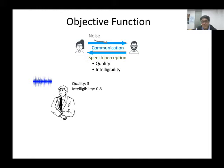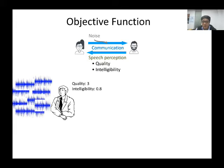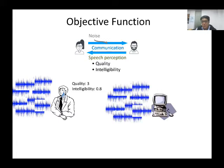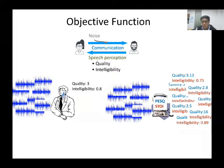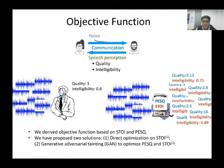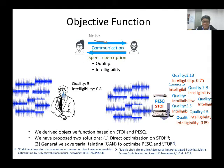It is not feasible to conduct human listening tests for large amounts of samples. Accordingly, we use two evaluation metrics: PESQ and STOI, which evaluate speech quality and intelligibility respectively. Many studies confirm these metrics are highly correlated with human perception. Based on this concept, we have proposed two solutions: a direct optimization approach published in IEEE TASLP, and an indirect optimization approach published in ICML.